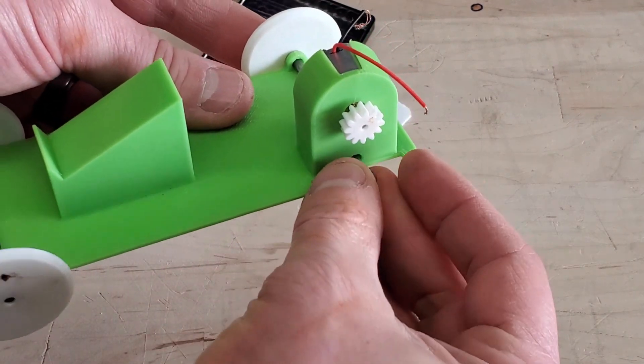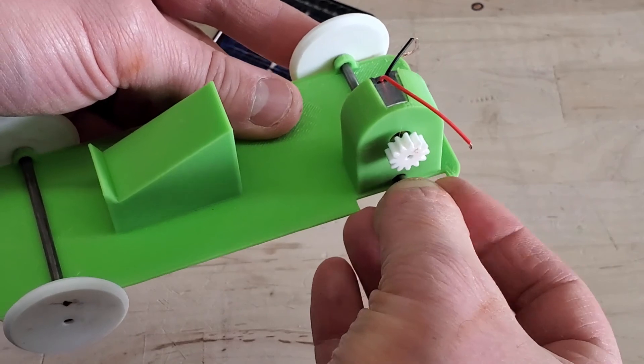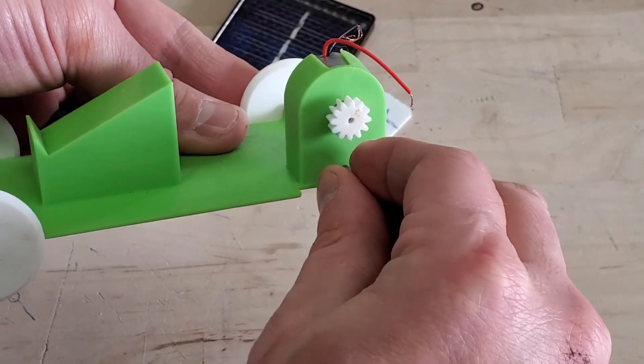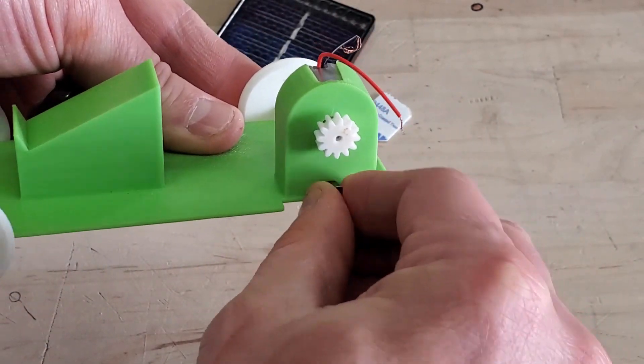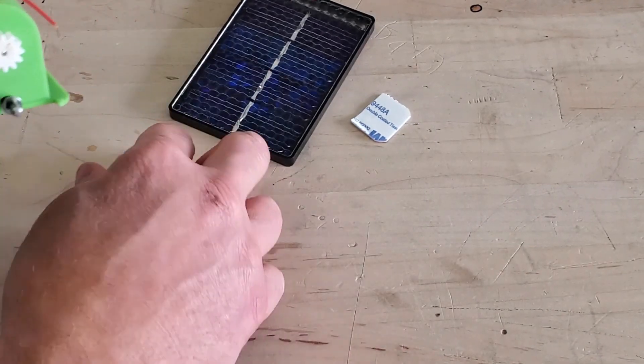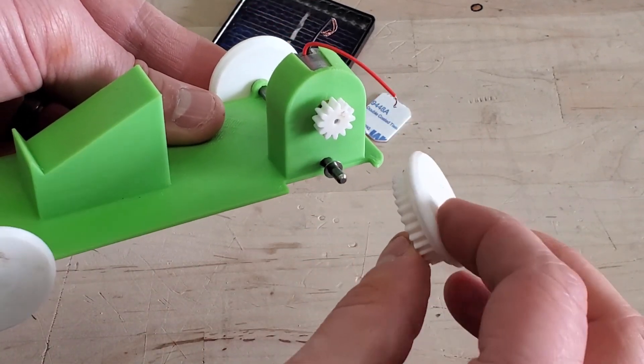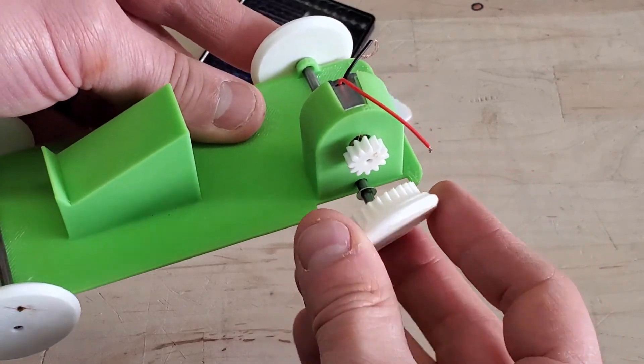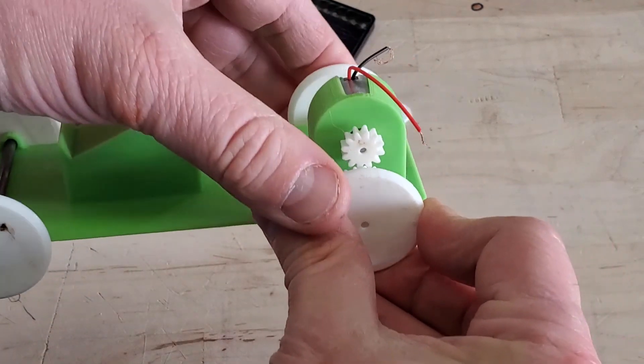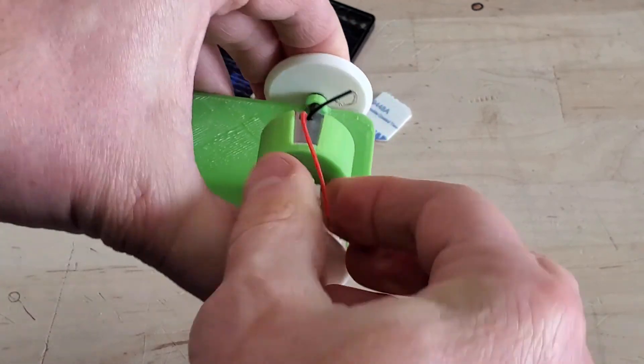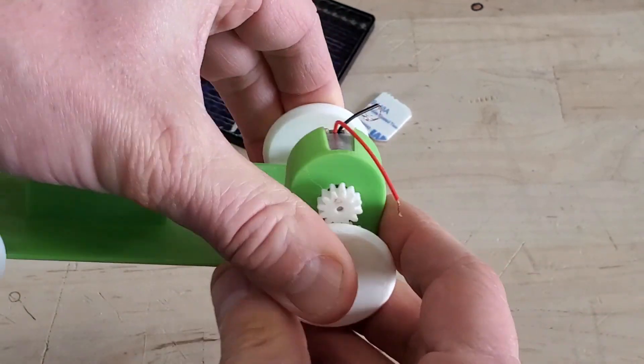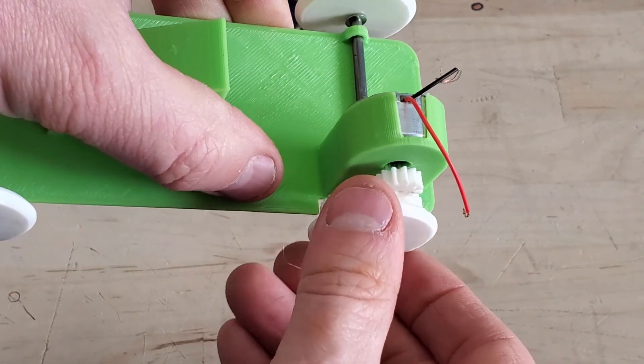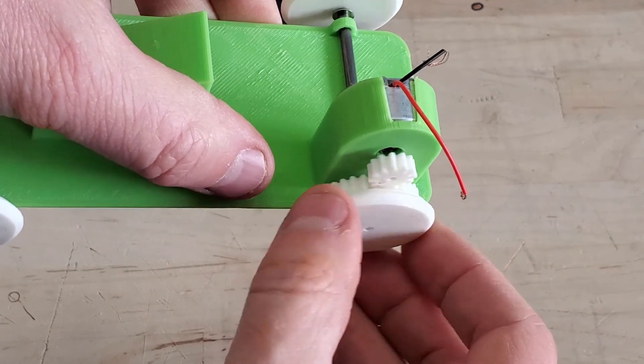Then grab your gear and wheel combination and press it onto the axle. Press it so that your gear teeth mesh. You should get your teeth meshing with your gears if you did it right.